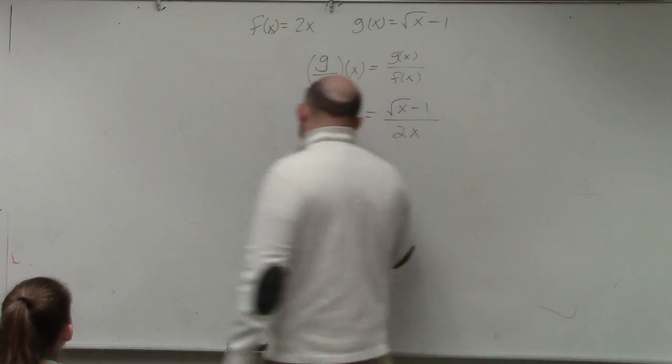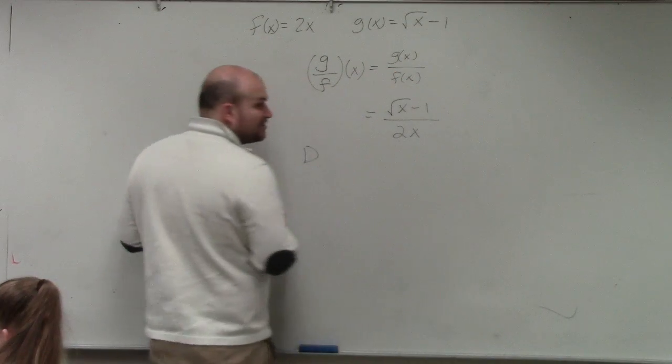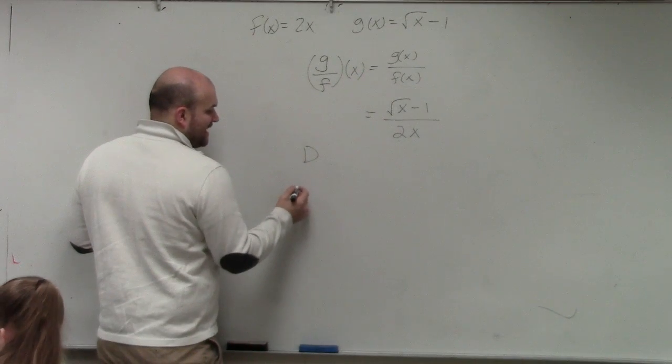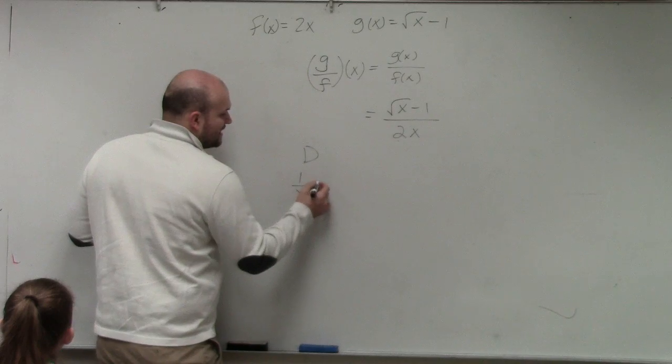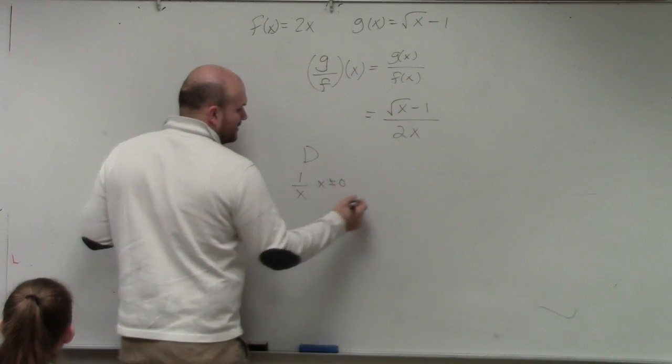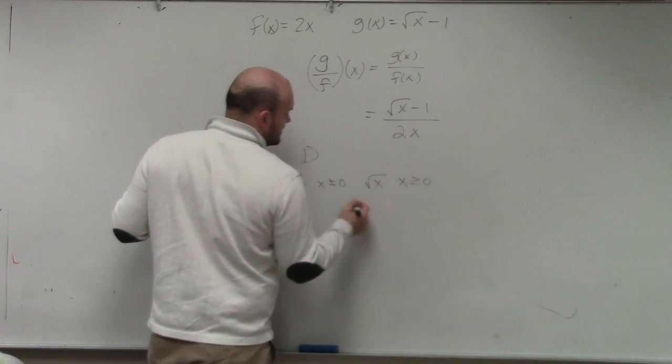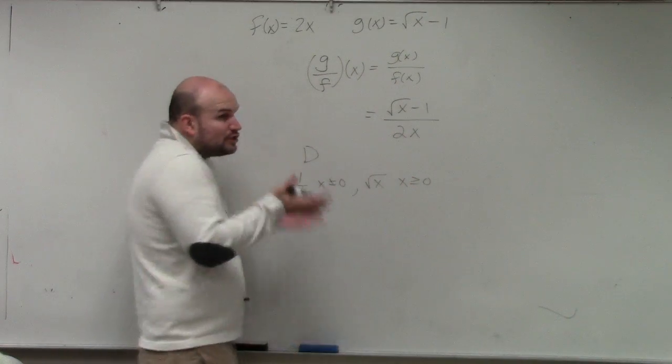Now we want to look at our domain. And now our domain, we have two restrictions. Our two restrictions is we say 1 over x, x cannot equal 0. And when you have the square root of x, x has to be greater than or equal to 0. Those are your two restrictions.